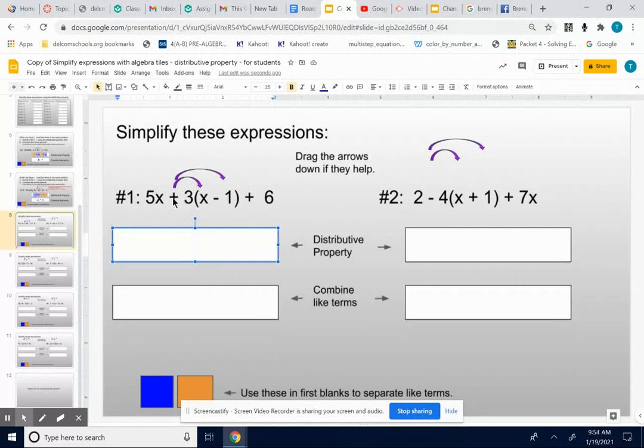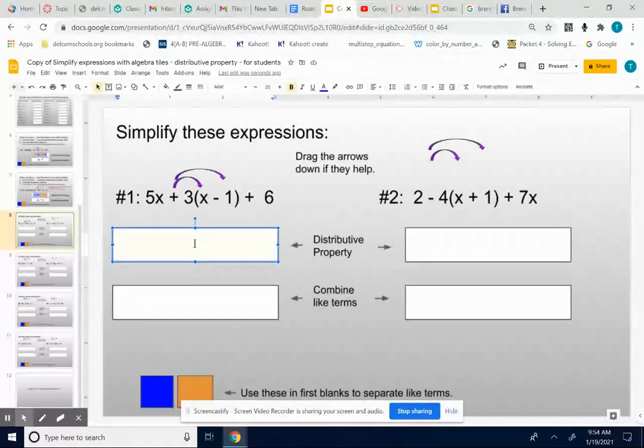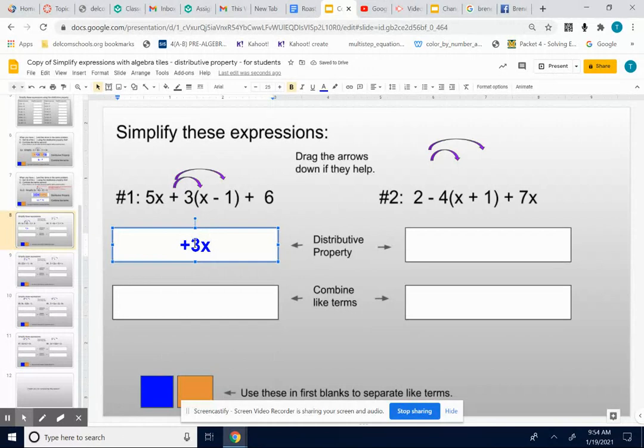Okay, we have a positive 3 times x. Make sure you put a positive or negative symbol as you do this in front of things. So that's a positive 3x. Positive 3 times x is a positive 3x. Now we have a positive 3 times a negative 1. We've got to think of that as a negative 1.